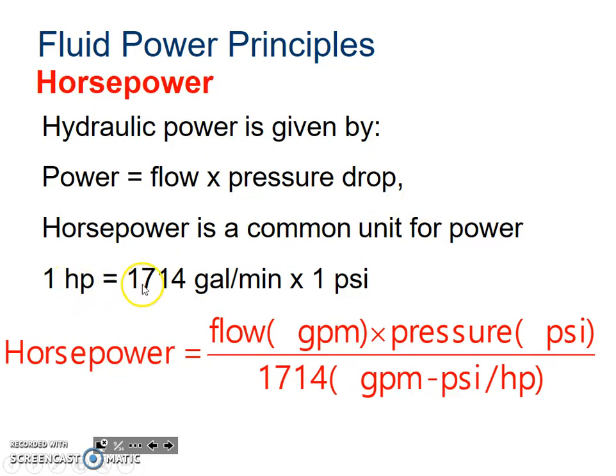You're going to want to write this number down. One horsepower is 1,714 gallons per minute per psi. So what you're going to do is you're going to use this equation where you take how fast the flow is, how many gallons per minute, times its pressure, divided by this constant, and that's going to turn it into horsepower.